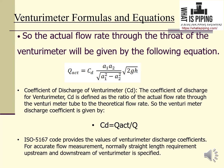ISO 5167 provides values of venturimeter discharge coefficients for accurate flow measurement. It also specifies straight length requirements upstream and downstream of the venturimeter, which are needed for proper working and to obtain accurate real values.